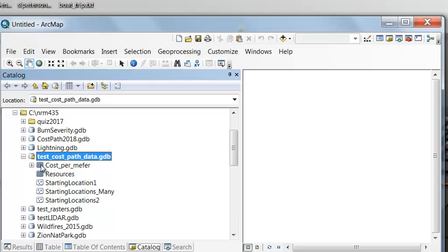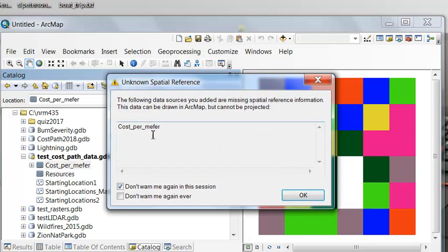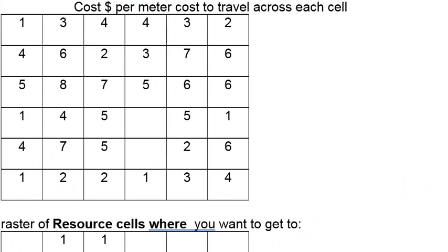The geodatabase has a raster representing how much it costs per meter to cross each grid cell. Let's add that to our data frame — there's no spatial reference information but that's fine. So we have a cost raster: the cost per meter to travel across each cell. For example, from the center of a cell it costs one dollar per meter to cross the entire cell; starting at the center it will be half that cost. There are also two cells with no data, and those cells will be treated as barriers — we can't build a path across any no-data cell.